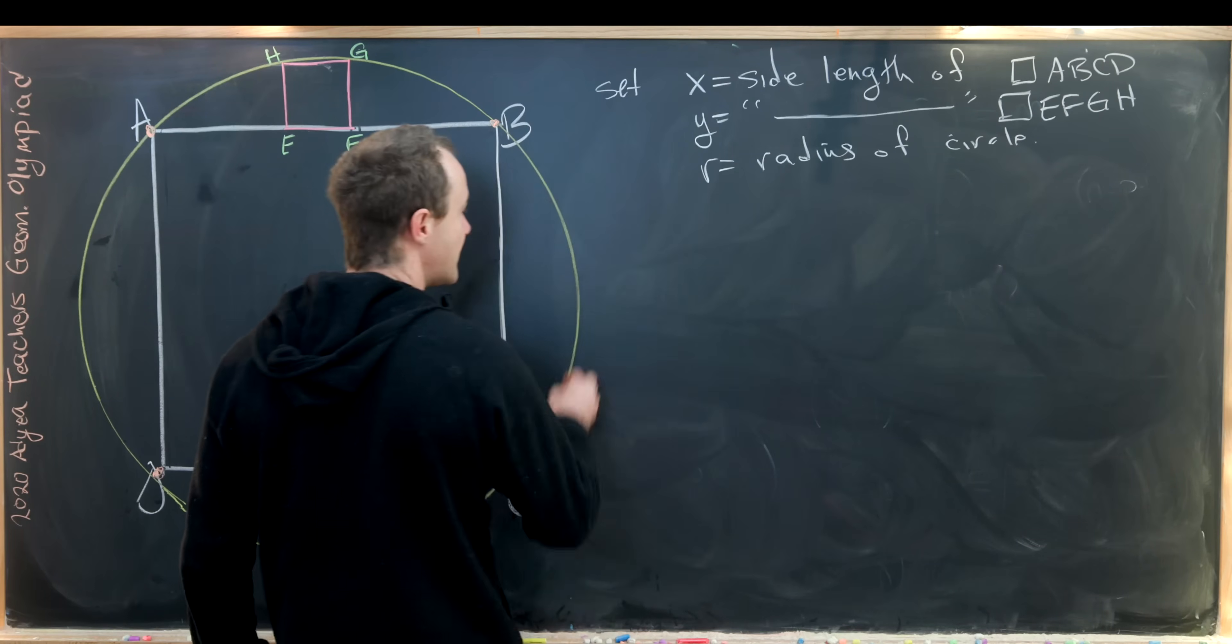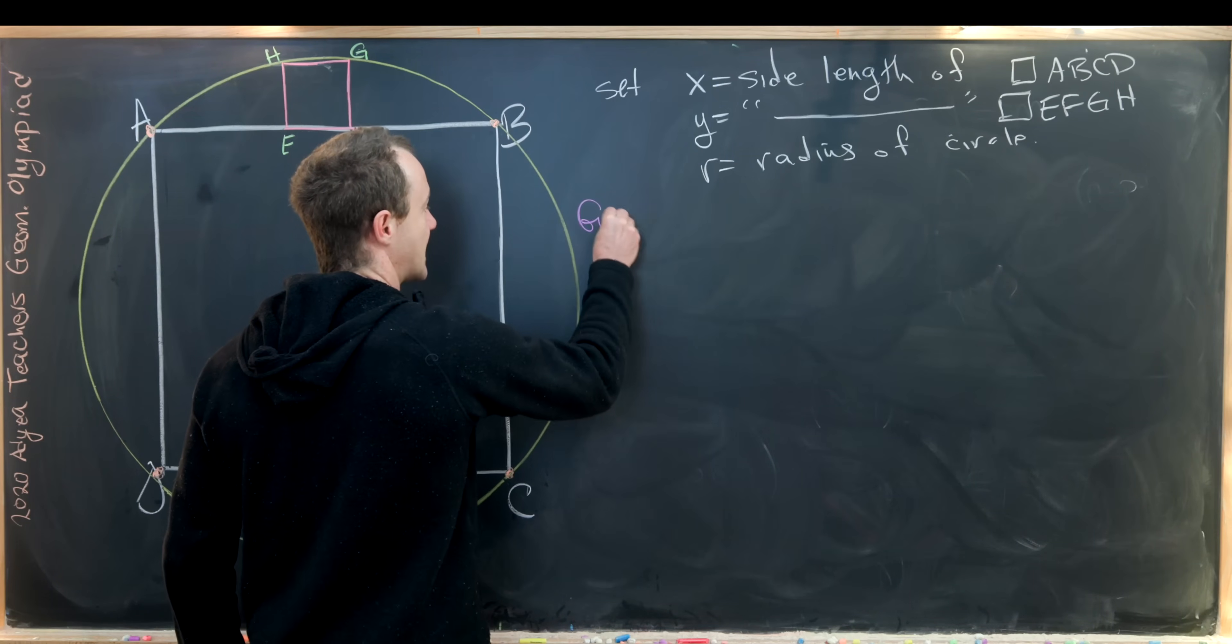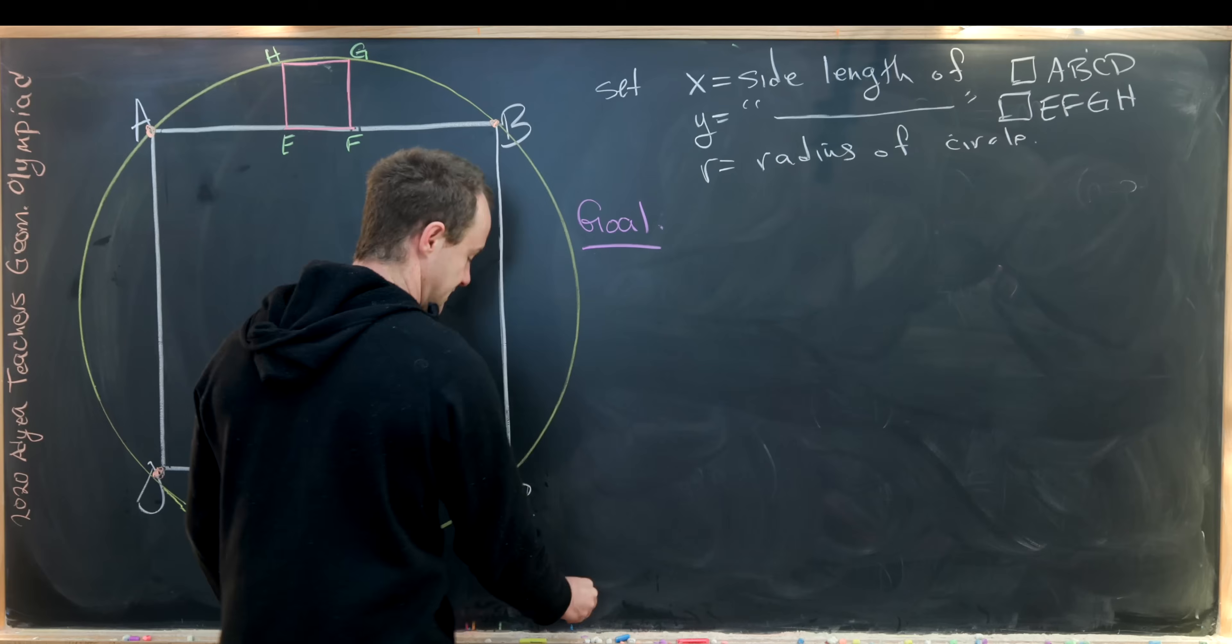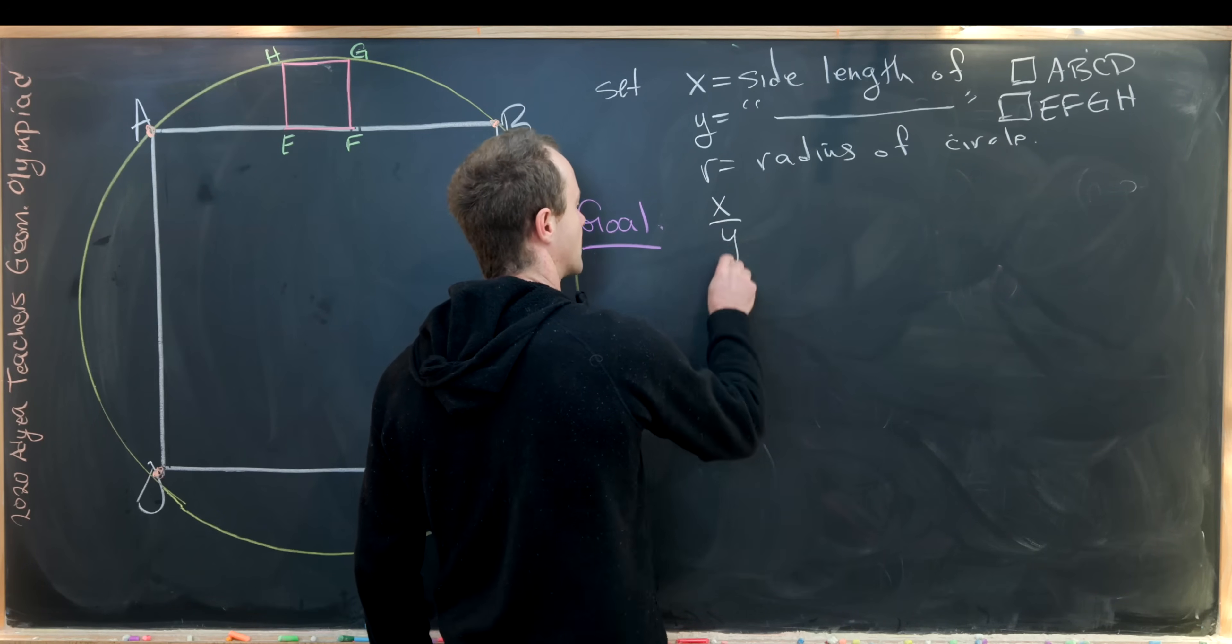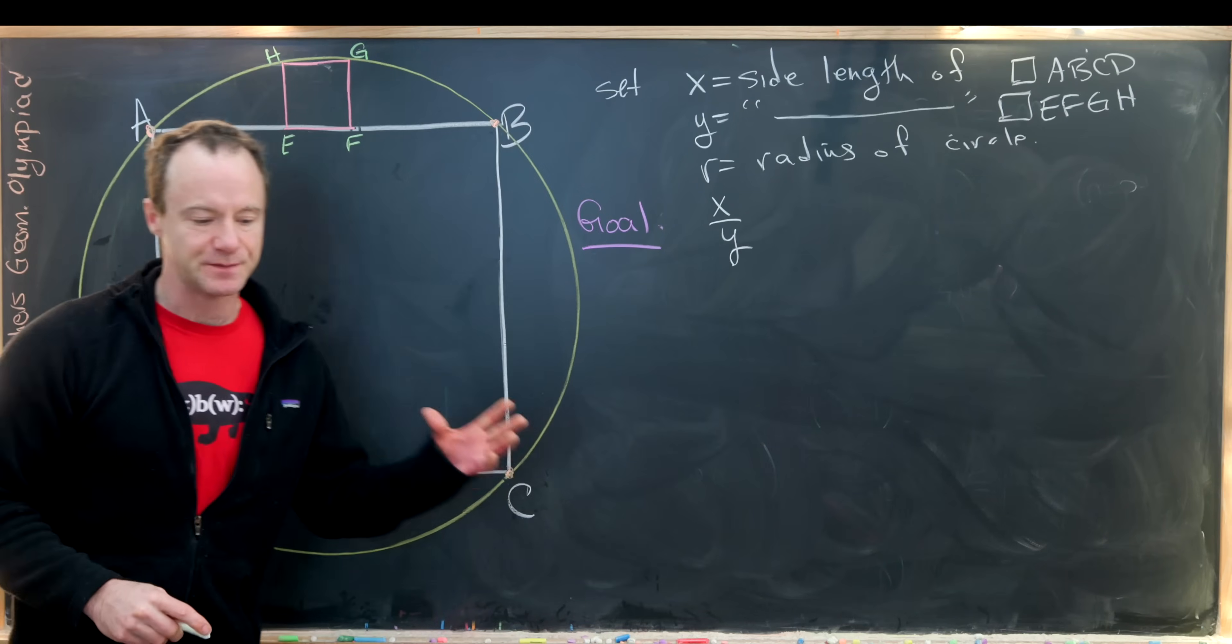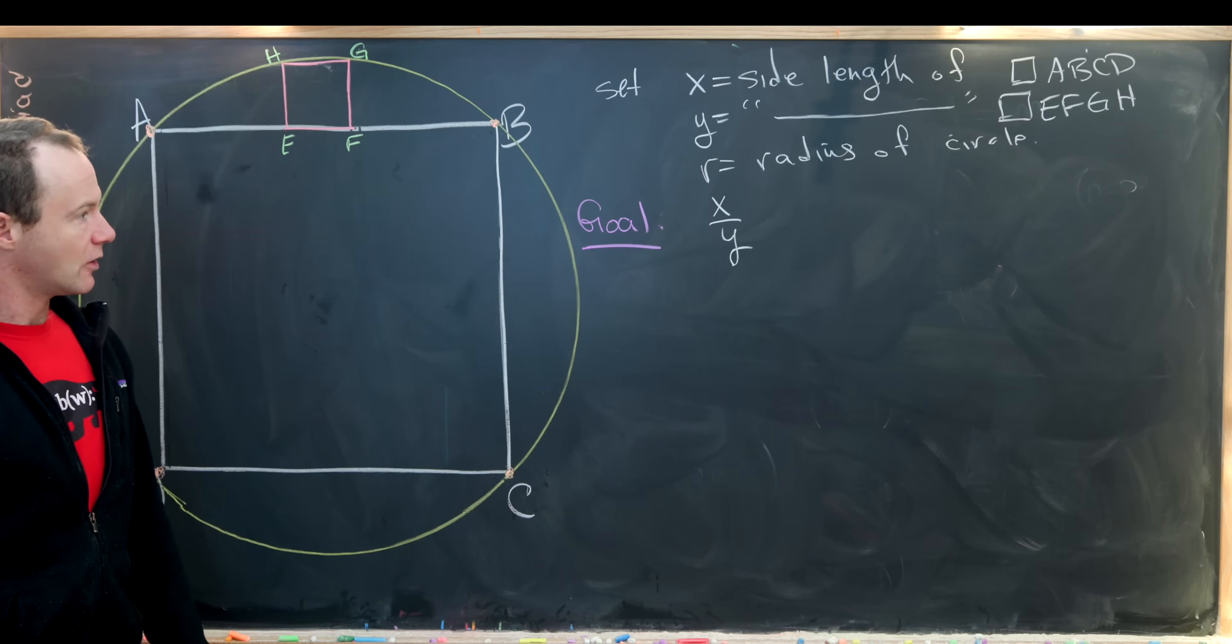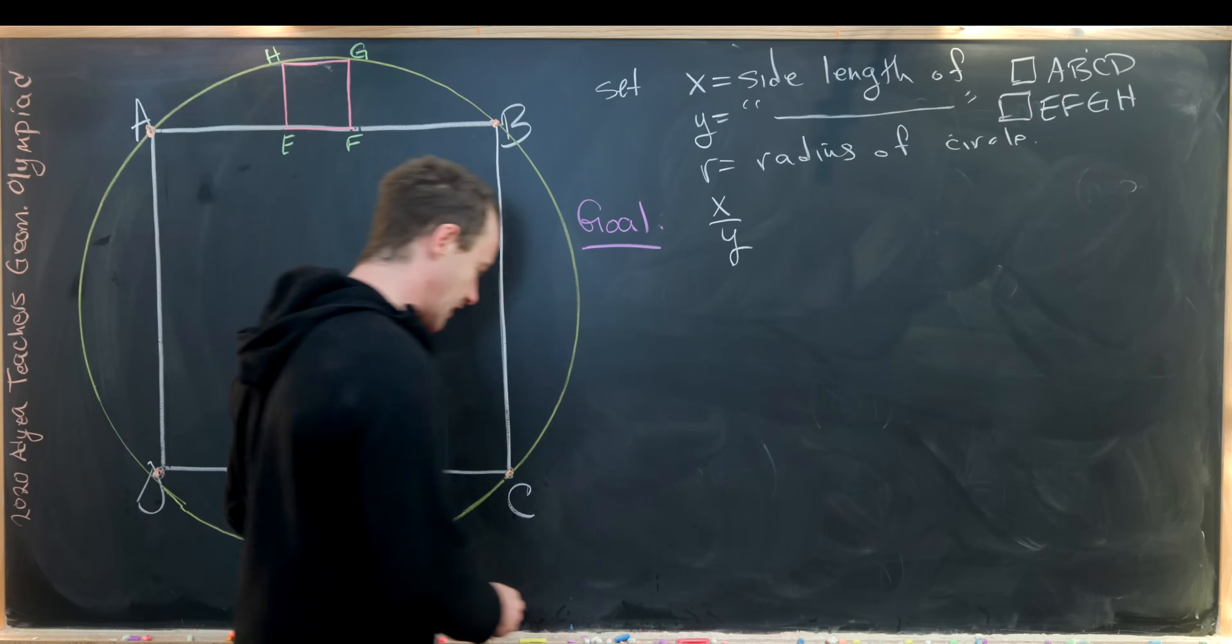With that notation we can rephrase our goal pretty easily. And our goal will be to determine X over Y. So that should be just a number. So let's see how we can achieve that goal.